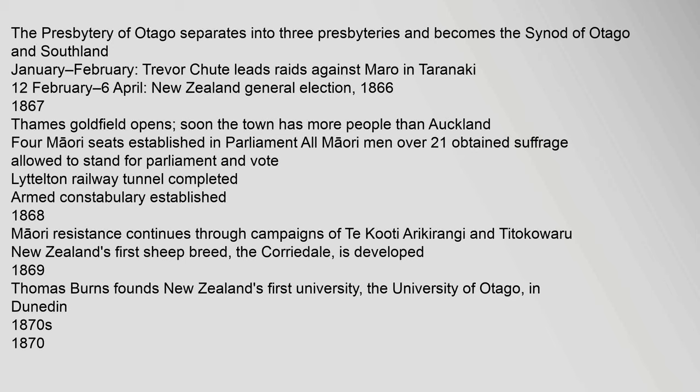1868: Maori resistance continues through campaigns of Te Kooti Arikirangi and Titokowaru. New Zealand's first sheep breed, the Corriedale, is developed. 1869: Thomas Burns founds New Zealand's first university, the University of Otago, in Dunedin.